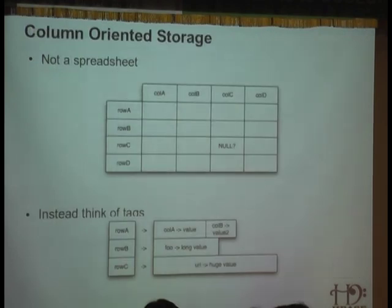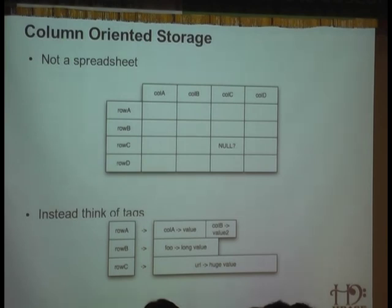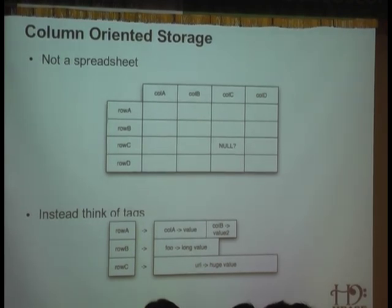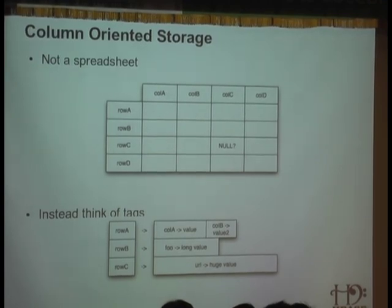HBase is column-oriented storage. It's a little bit like a spreadsheet, but you should think about it in terms of tags — rows are index pointers to a series of tags. Within the row, you have a number of keys and values, any number of keys and values, perhaps millions.